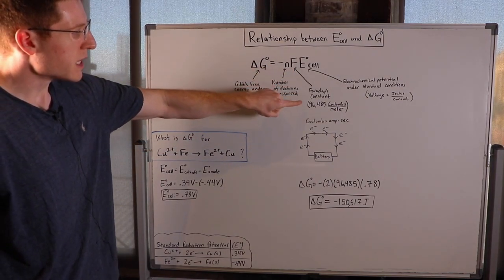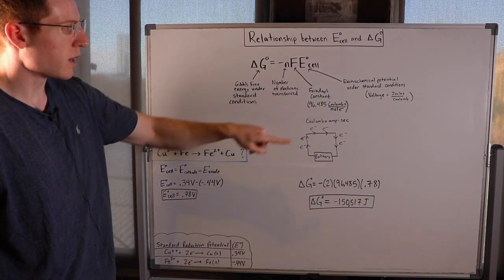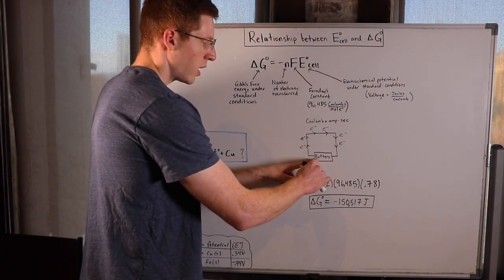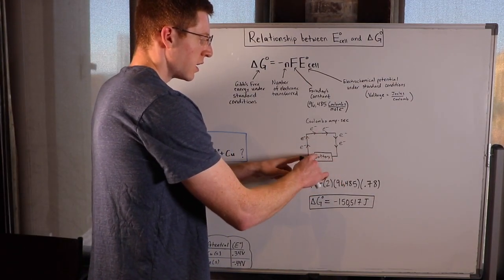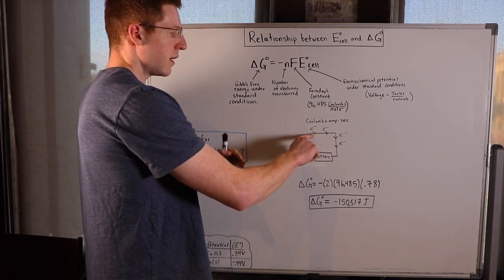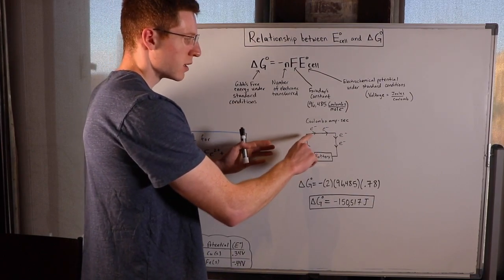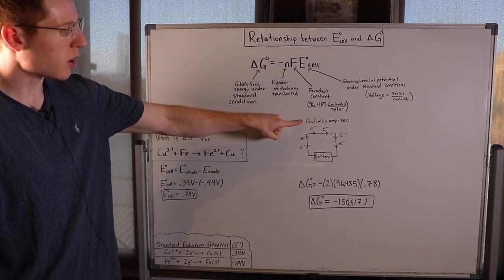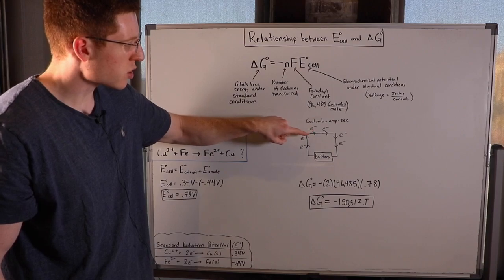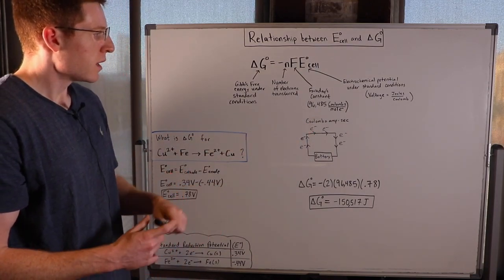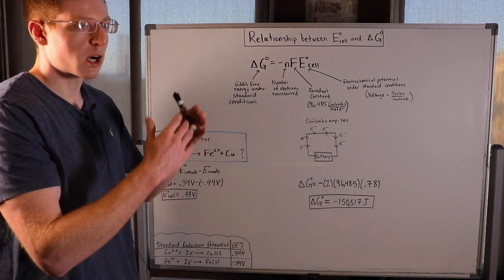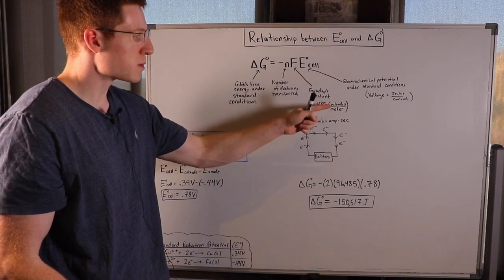Faraday's constant, F, is 96,485 coulombs per mole of electrons. And the way I understand this is I think about a battery with a wire attached to it in a circuit. Along this wire, electrons are traveling, and I imagine sitting at a certain point on the wire and counting the number of electrons that pass by me in one second. That is the definition of a coulomb. A coulomb is defined as amps times seconds. So it's kind of the number of electrons or charges that pass by you in one second. What Faraday's constant does is it scales the concept of a coulomb up to an entire mole of electrons.